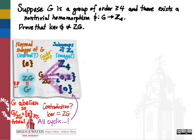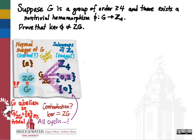The two key ingredients we needed were: first, the first isomorphism theorem, which guaranteed that the factor group is isomorphic to the image, and that image had to be one of the subgroups of Z₄, all of which are cyclic. And second, the nifty center theorem, which says that any time the quotient of a group by its center is cyclic, that group must be abelian, and therefore that quotient is trivial — so the quotient of a group by its center is either trivial when the group is abelian, or non-cyclic when the group is not abelian.